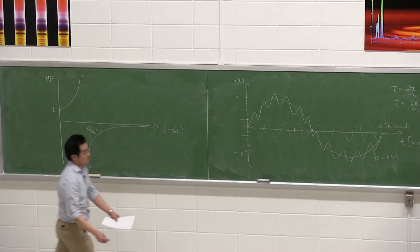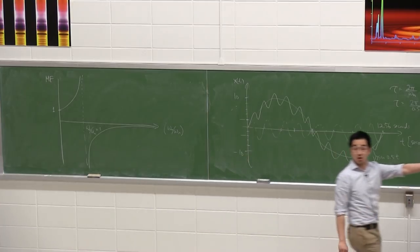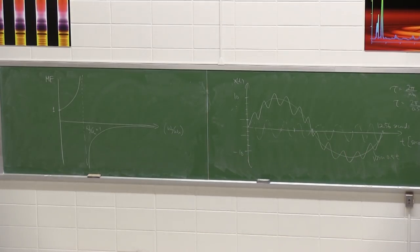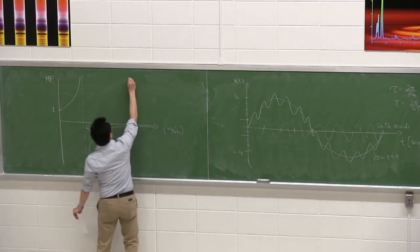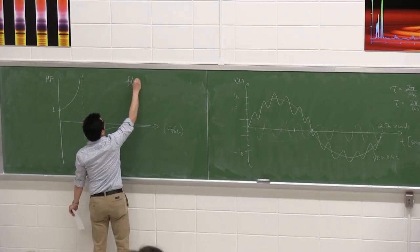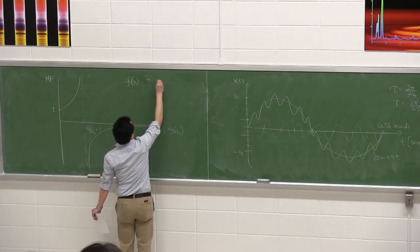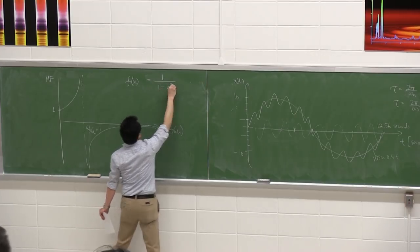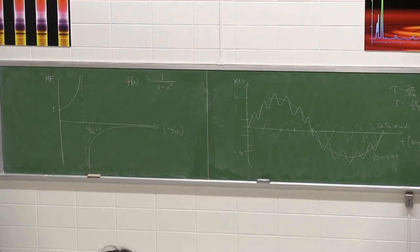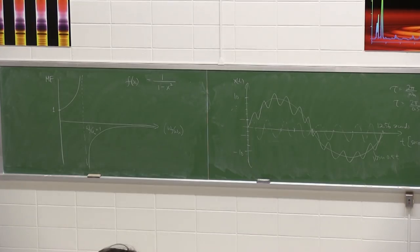To clarify: if you plug this into a calculator or MATLAB, it's just the function f(x) = 1 / (1 - x^2), where x is omega_0/omega_n and f is the magnification factor. Nothing fancy — x is an independent variable.